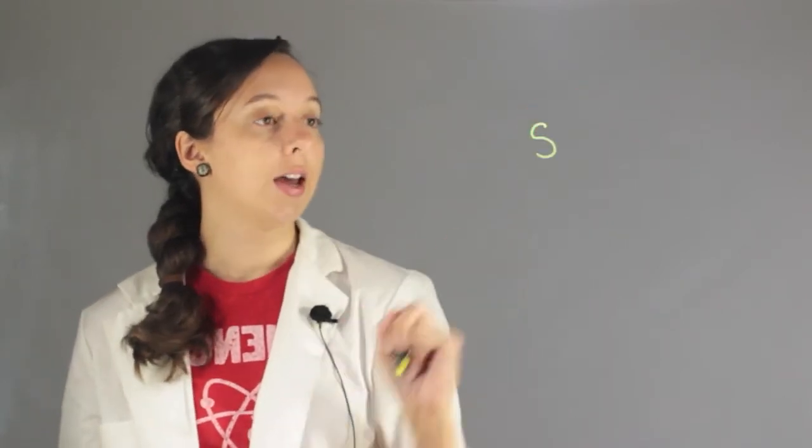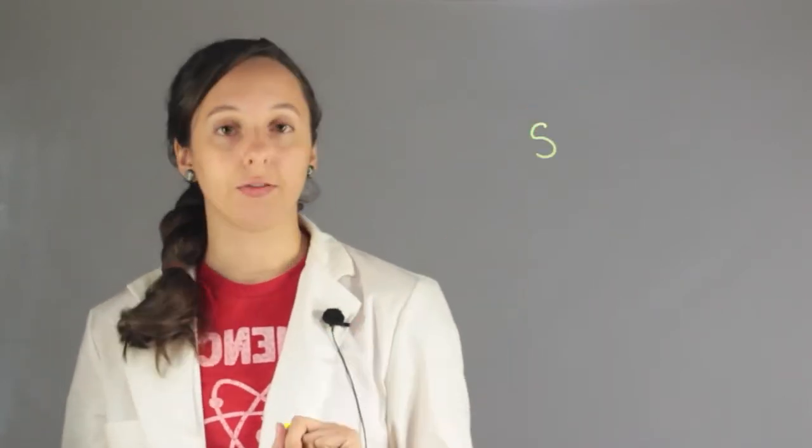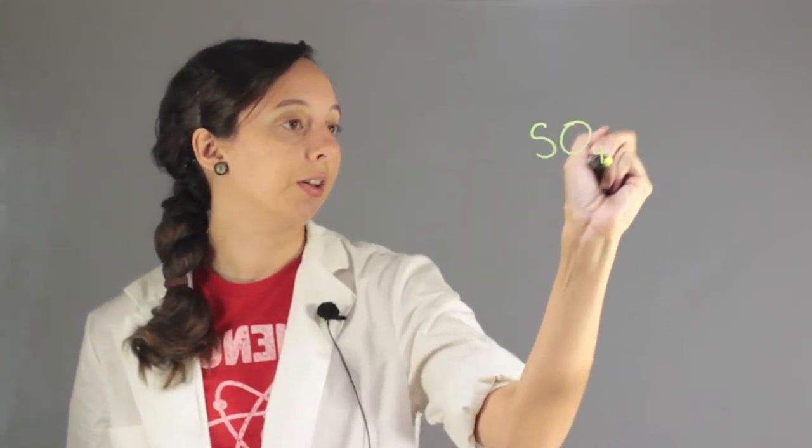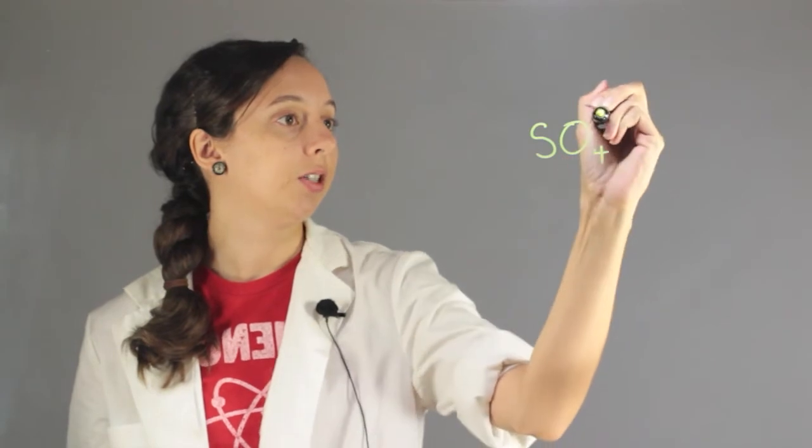Hi, I'm Robin Higgins and this is sulfate ion versus sulfate atom. So let's look at what sulfate is and then we can decide if it's an ion or an atom. Sulfate has a sulfur right in the middle and its chemical formula is SO4, 2 negative.